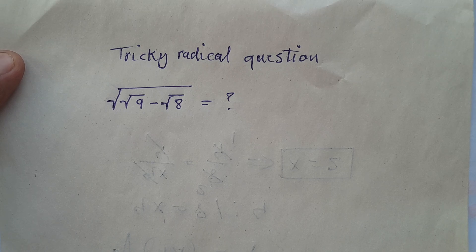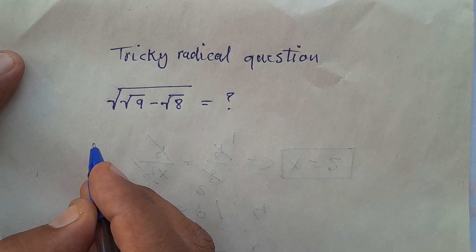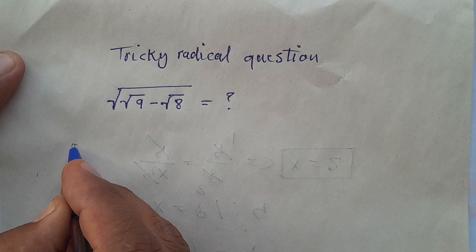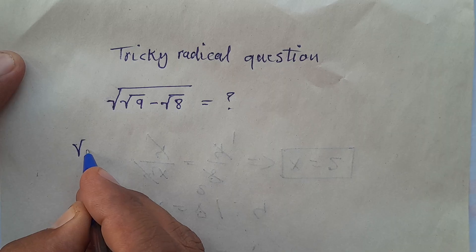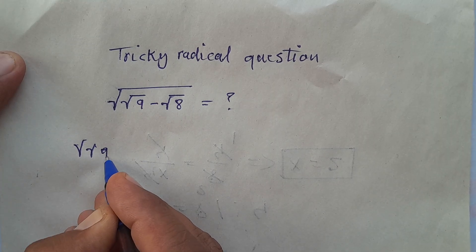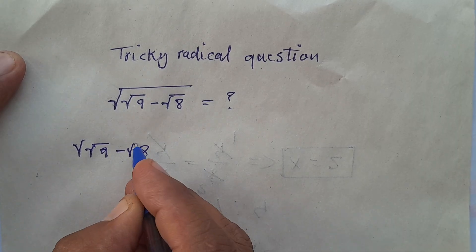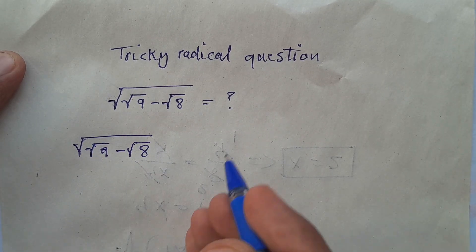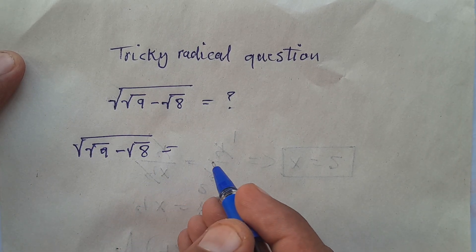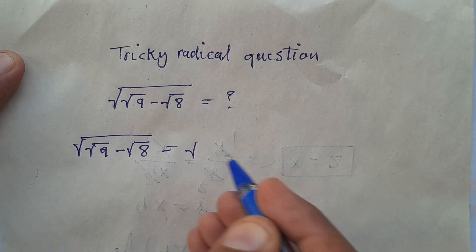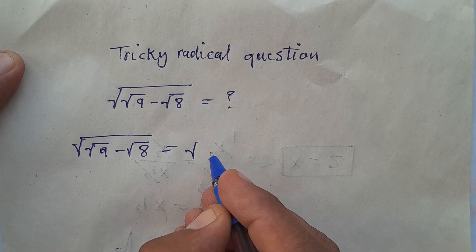Hello everyone, welcome to Math Classroom. Today we have a tricky radical question and let's simplify it. We have square root of square root of 9 minus square root of 8.